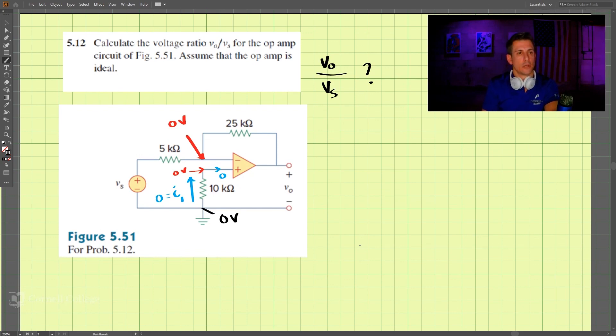So if we go ahead and write the current, we'll call this current I0, and I0 here is also I0 over here. So these two currents that go through this resistor, they're equal.